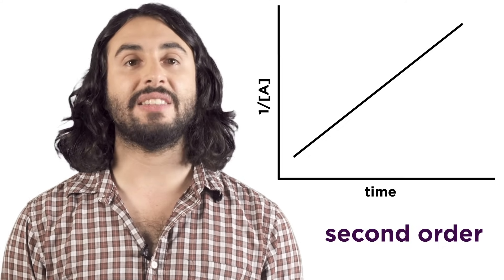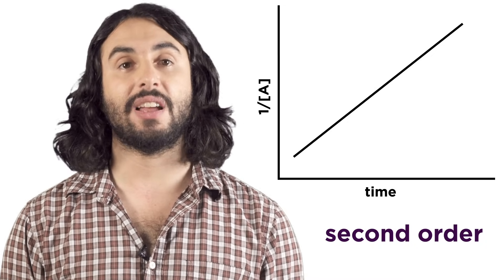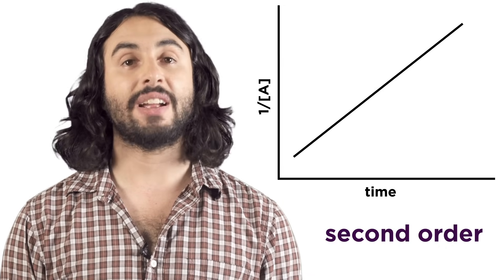So when we record kinetic data we can try to plot it according to these different relationships, and the one that gives us a straight line will tell us the overall reaction order simply by graphical analysis. Let's check comprehension.